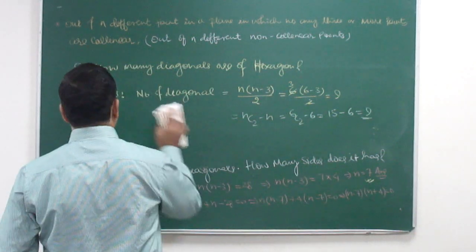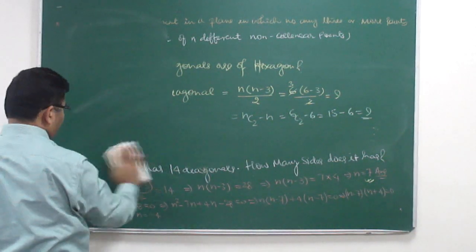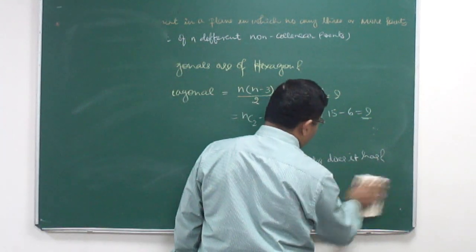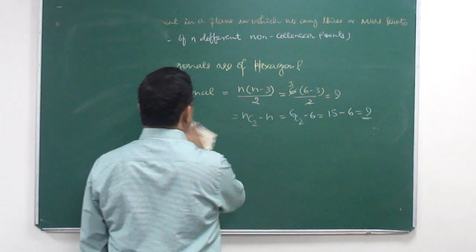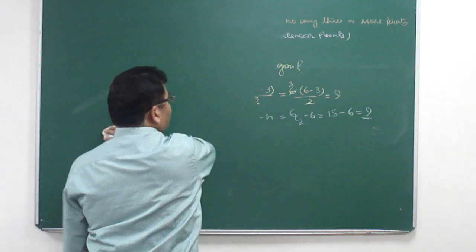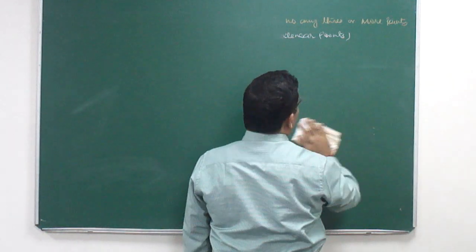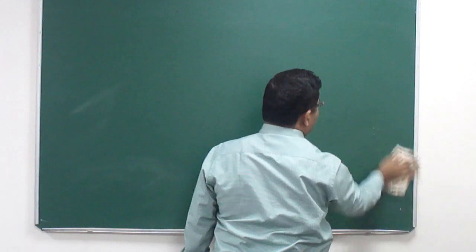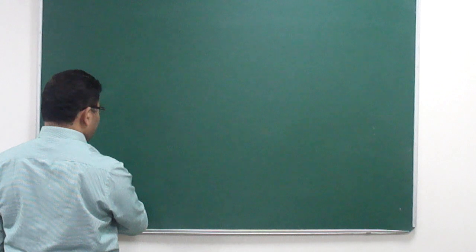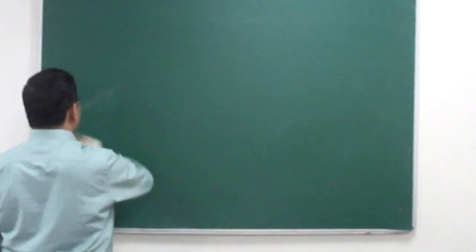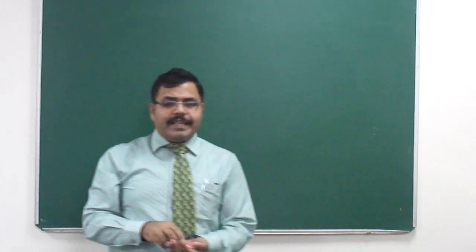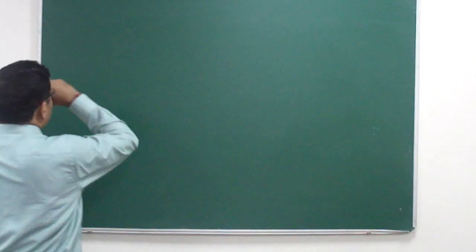Now, a question that definitely comes to mind: what would happen if some points are collinear? The previous formula is applicable only for questions where points are non-collinear and all lie in the same plane. So let us write a few more points and discuss what happens when some points are collinear.